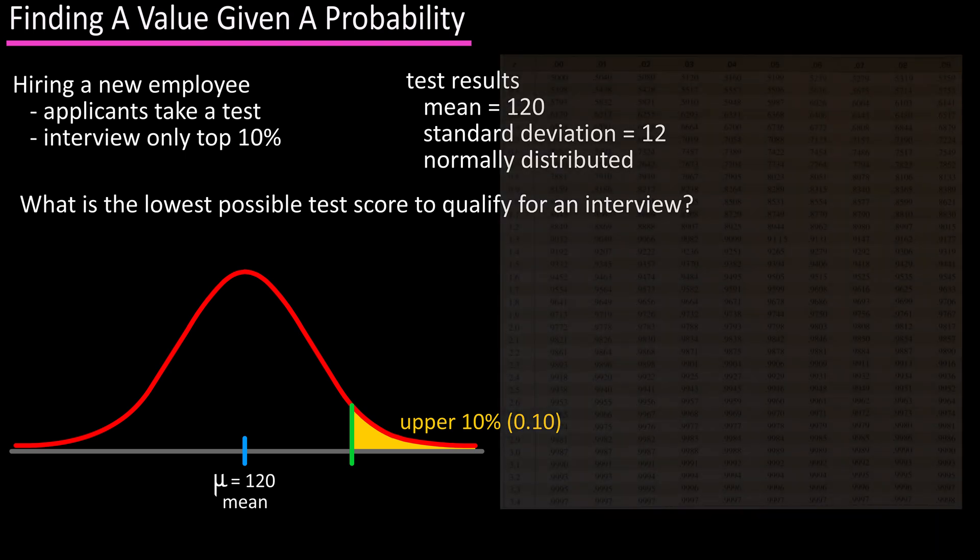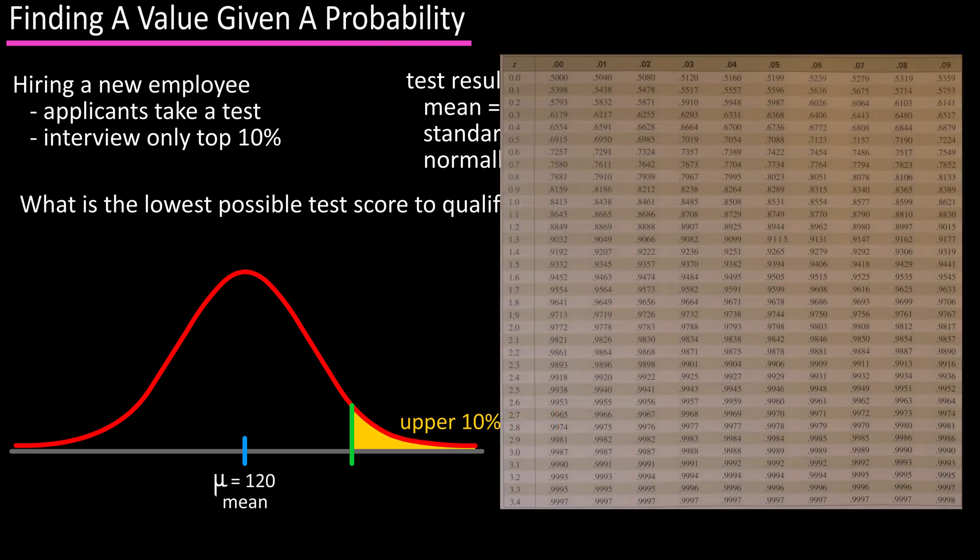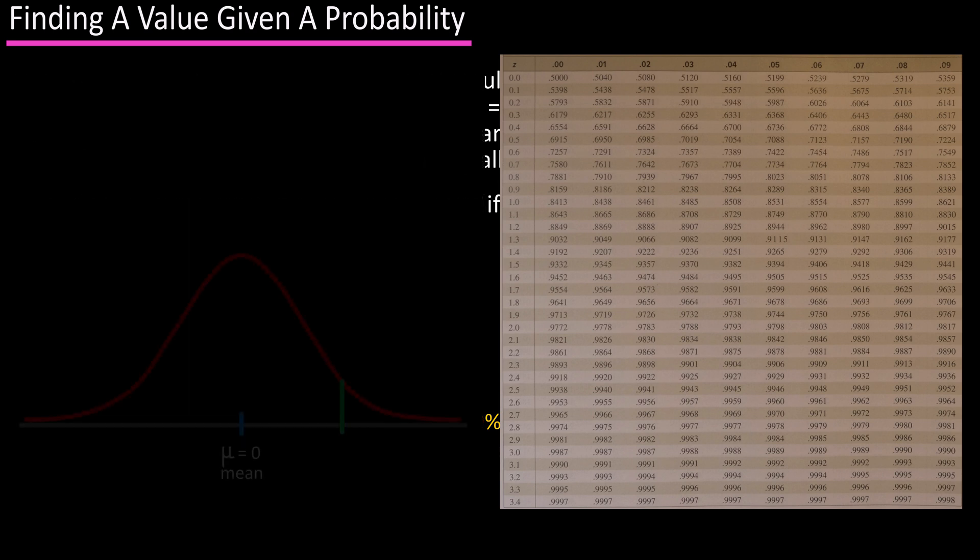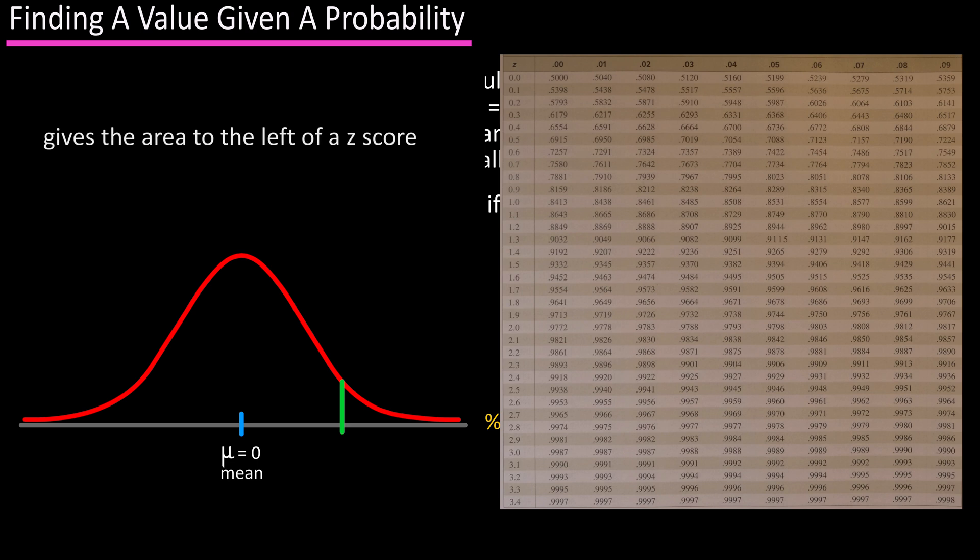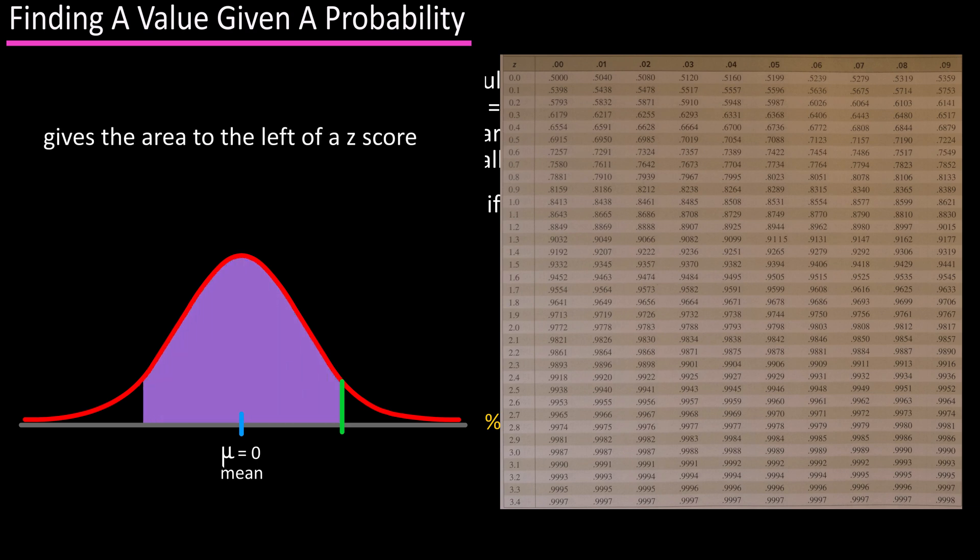To find this area we're going to use a standard normal distribution z-score table, which can be found through an internet search or in any statistics book. However, this table gives us the area or probability to the left of a z-score value. This area here under the curve.